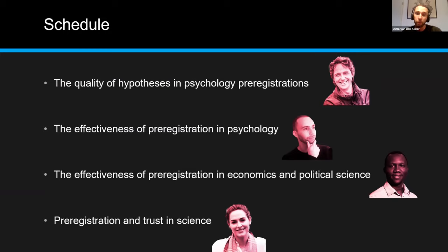I'd like to introduce Marcel van Assen for the first talk. Marcel has a background in mathematical psychology and is currently a professor in mathematical sociology at Utrecht University in the Netherlands, though he spends most of his time at Tilburg University. He's just been appointed vice dean of education, and most importantly, he is my PhD supervisor. Marcel, take it away, please.